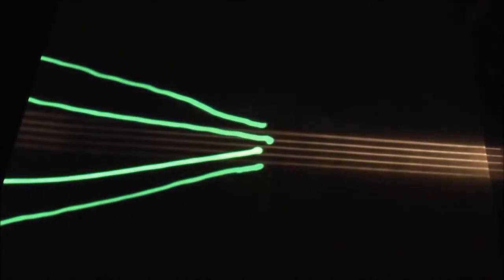Concave lenses cause light beams to diverge and don't have a focal point. Well, they do, but it's imaginary. You can trace these rays back to where they seem to be coming from. And that's the imaginary focal point.